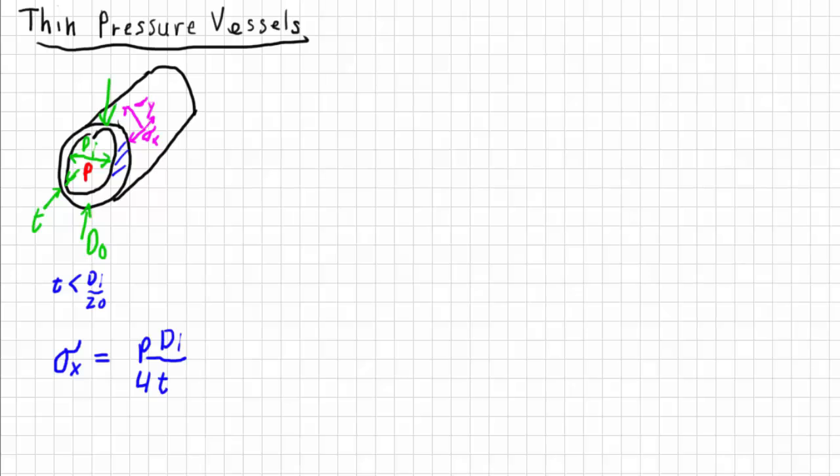Now, this value inner diameter, sometimes others use the mean diameter, which is the average between the inner diameter and the outer diameter. But if we're talking about thin pressure vessels, it won't make that much of a difference. And I'll show that to you later in the example.